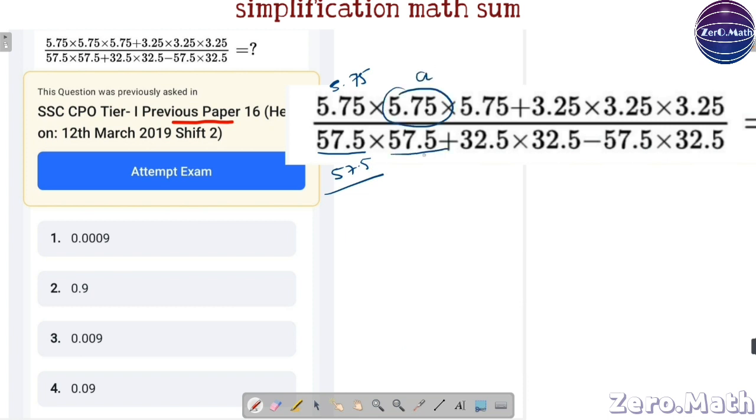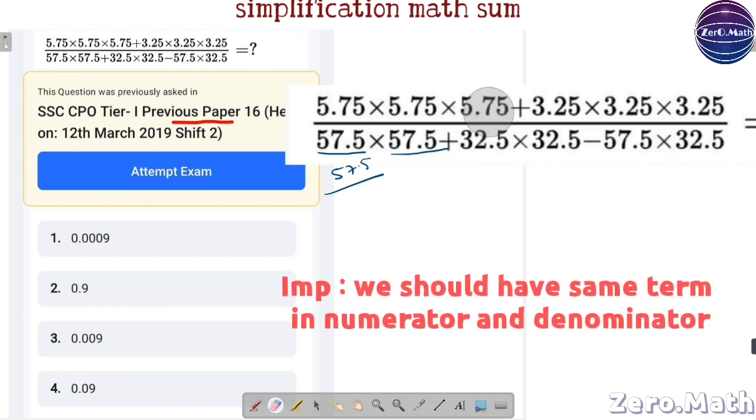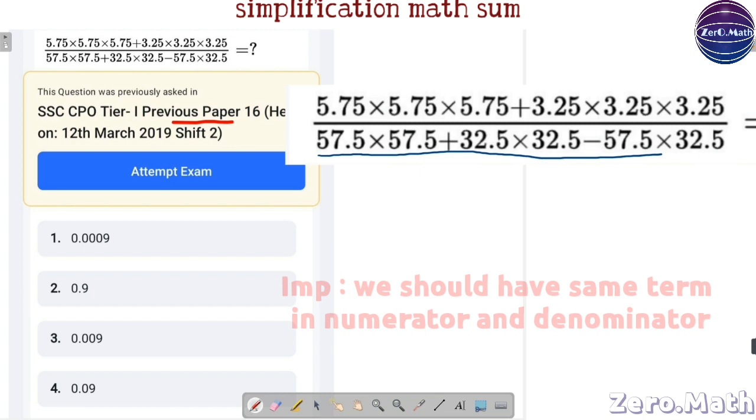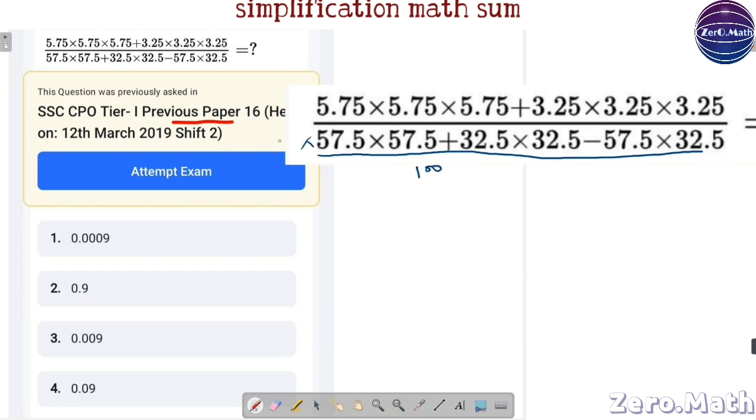Let's call 5.75 in numerator as a. If we have a in numerator, then in denominator also we should have a. So, for that, what we need to do, we will simply divide our denominator by 100 and we will also multiply it by 100.